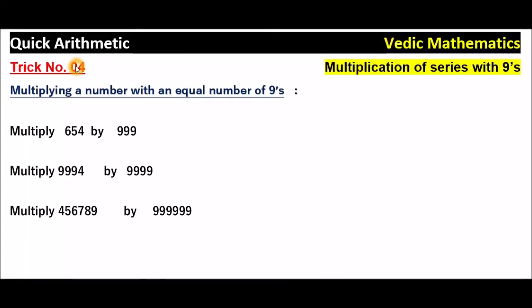Vedic mathematics, trick number 4: multiplication of a series with 9. So multiplying a number with an equal number of 9s. Here I have given 3 examples. Multiply 654 by 999. Here, how many digits are there? 3 digits. And here also an equal number of 9s — 3 and 3.